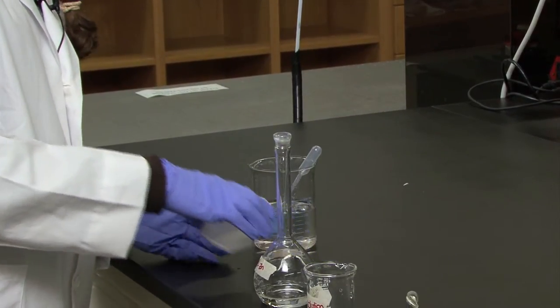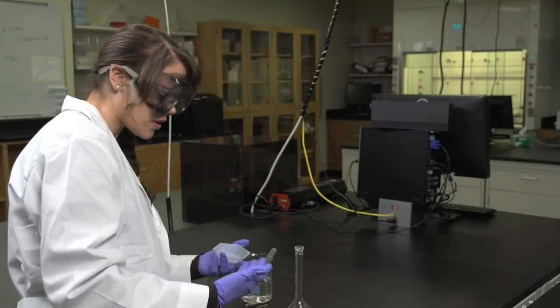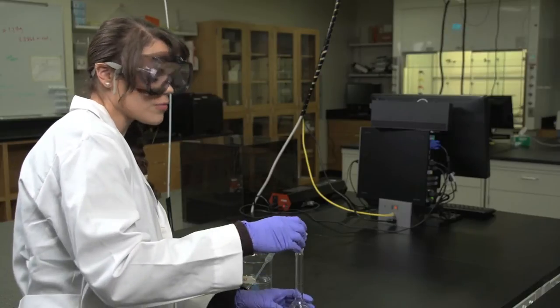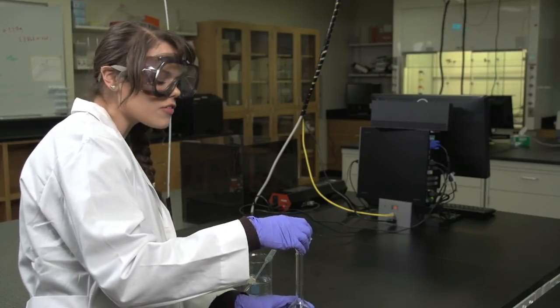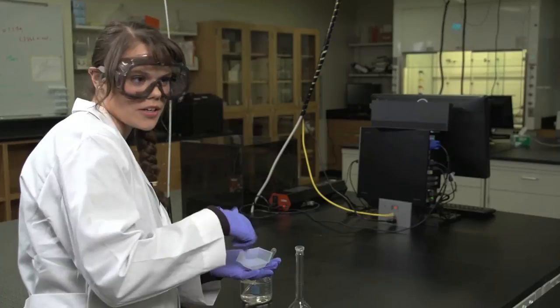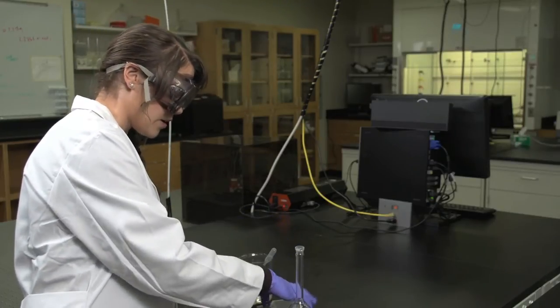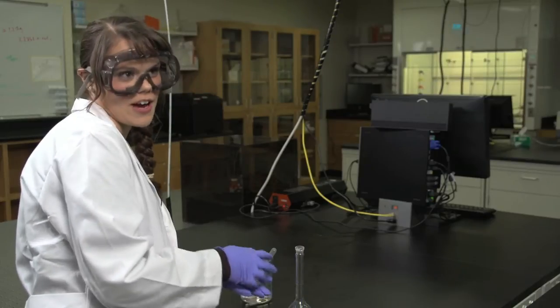If you are weighing something out into a weigh boat, you would do the same procedure. You would first put the solid directly into the volumetric flask, and then you would proceed to rinse the weigh boat into the volumetric flask. You would do this at least five times as well.